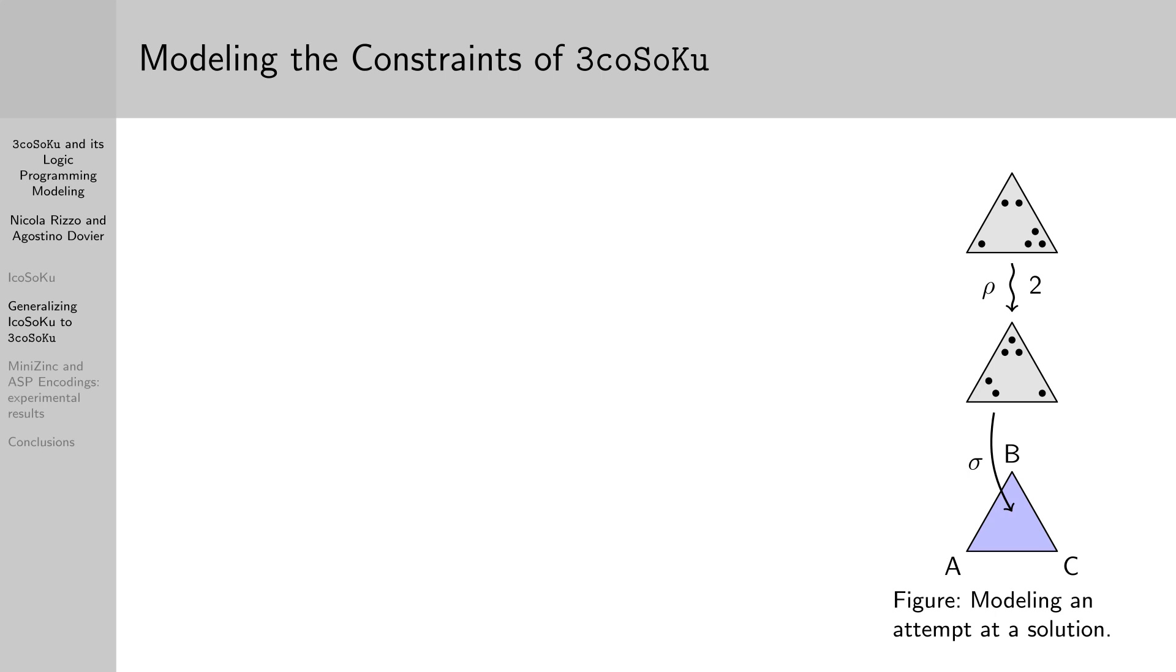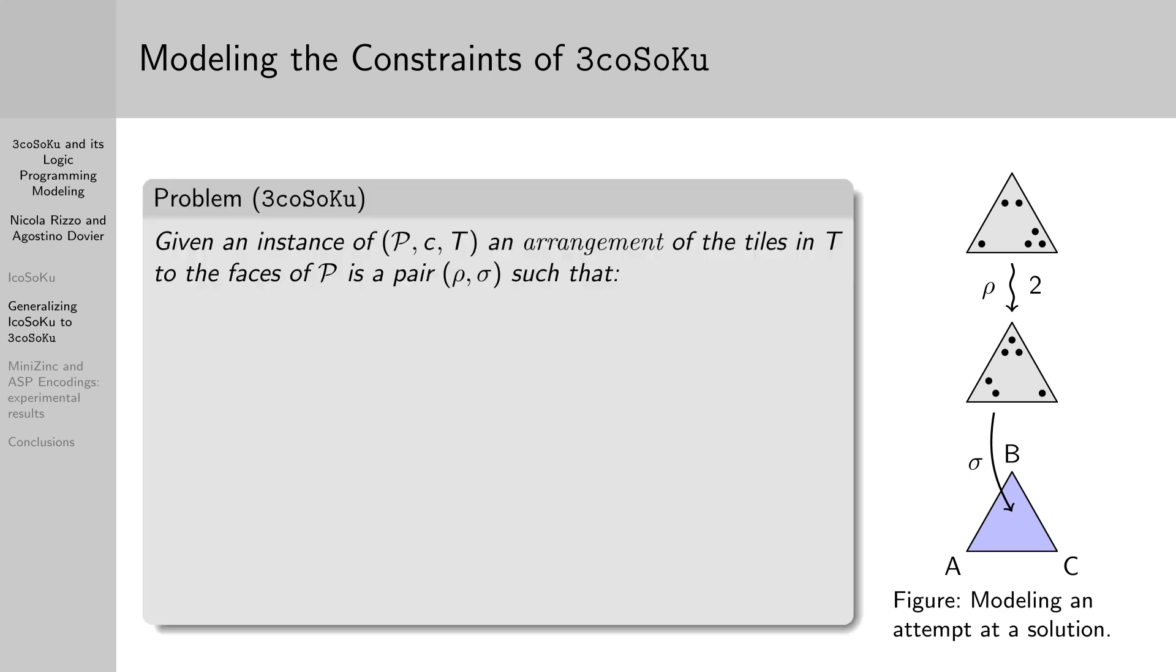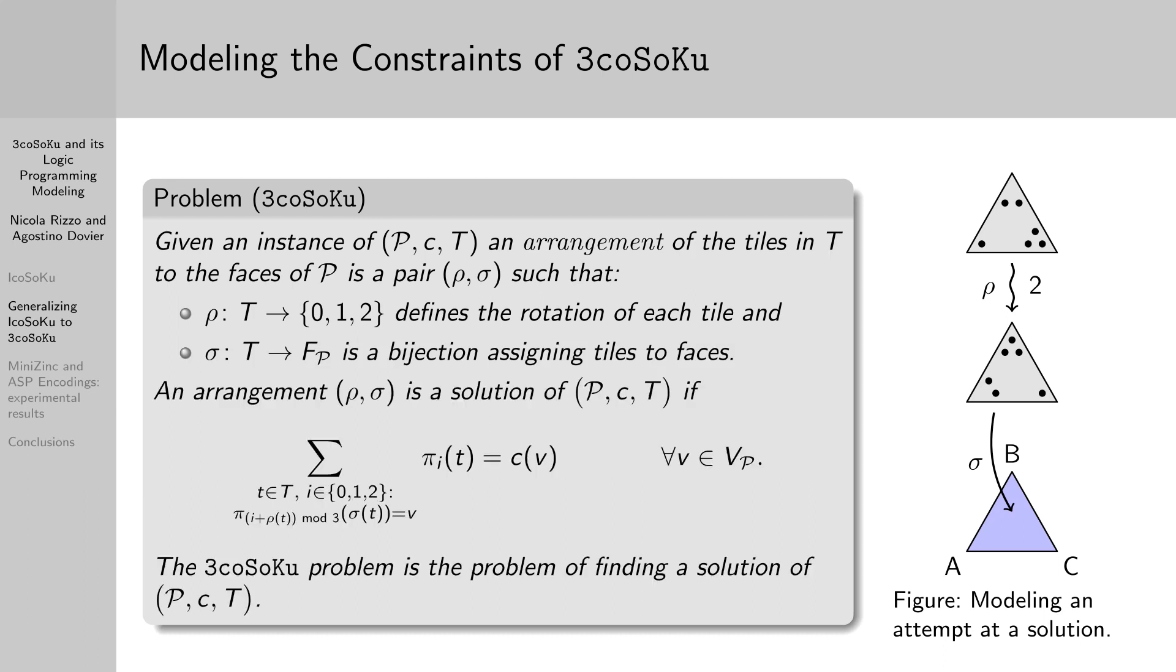We can now model the attempt at a solution of 3coSoKu, defined by the rotation of each tile and its assignment to a face of the polyhedron P. In fact, an arrangement of the tiles to the faces is defined as a pair of functions rho and sigma, such that rho defines the rotation 0, 1, or 2 of each tile, and sigma is a bijection of the tiles to the faces. An arrangement is a solution if these constraints are satisfied, that is, if the weights placed near each vertex add up to the capacity specified by function c.